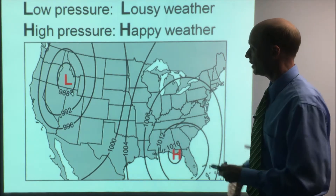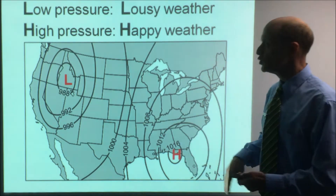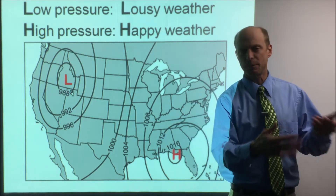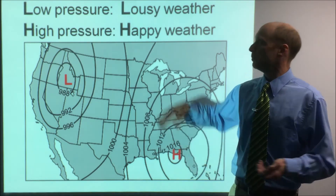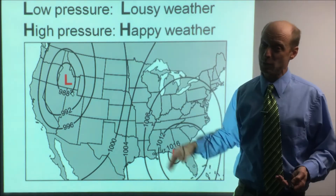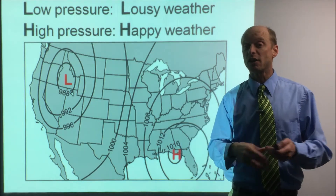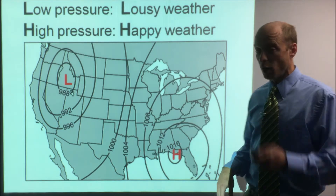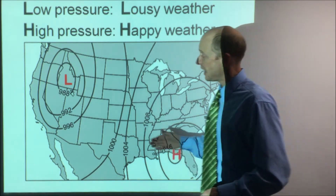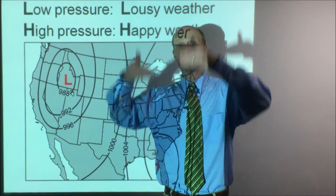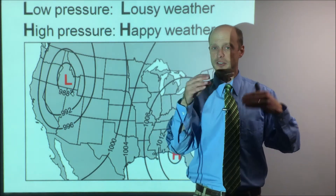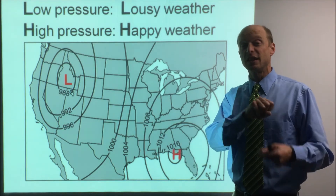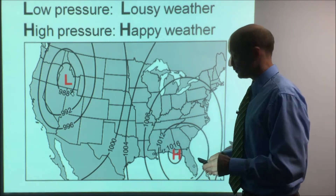Now, high pressure and low pressure and the type of weather you get at each. Low pressure gives you lousy weather — cloudy and rainy. High pressure means happy weather: not cloudy, not rainy, or just puffy fair-weather clouds. The reason is that air goes into a low and then rises — rising air expands, cools until it reaches its dew point, and clouds form. At a high pressure, the reverse happens: air is going down, compressing, getting warmer, getting further from its dew point.